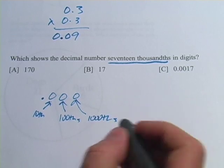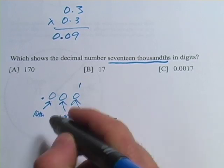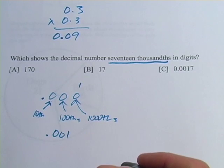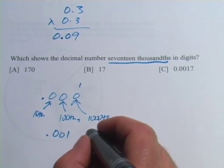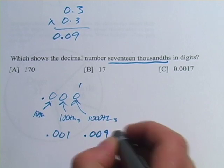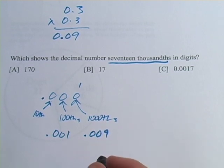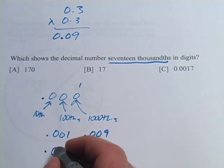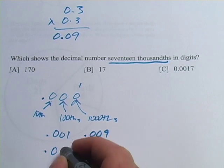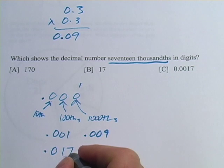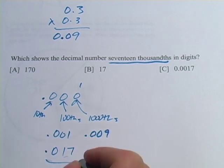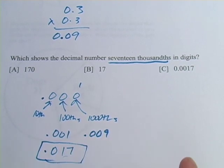So if I wanted one thousandths, I'd put a one in that place, and I would get 0.001. That would be one thousandth. If I wanted nine thousandths, I would put a nine in that place. If I want seventeen, I actually have to put a seven in the thousandths place and a one in the hundredths place. That is seventeen thousandths, and that's the answer they wanted.